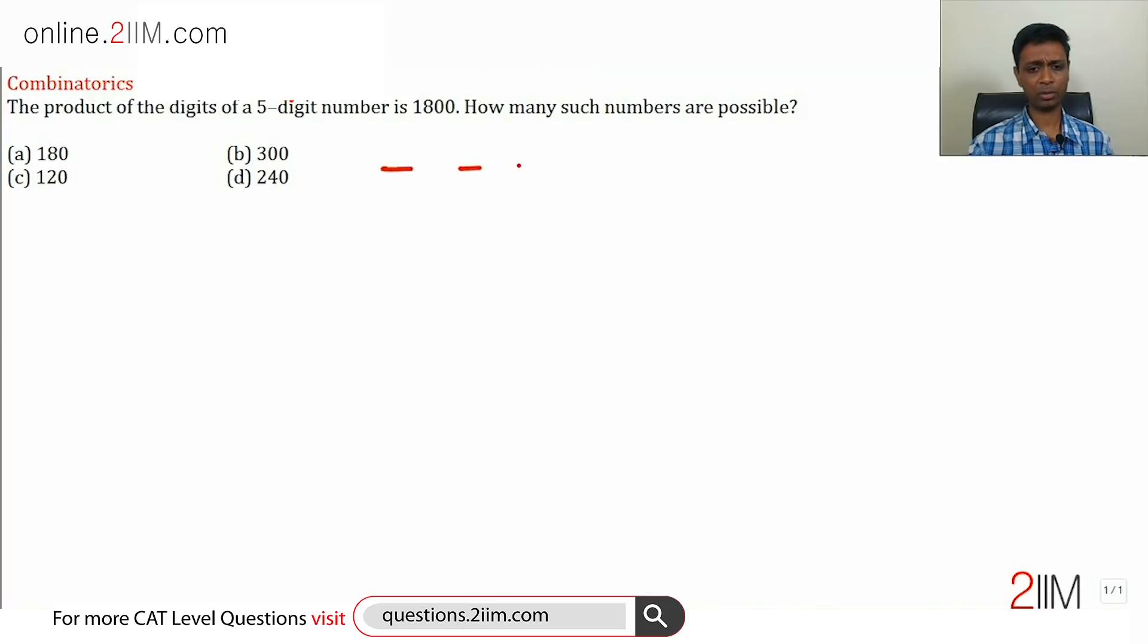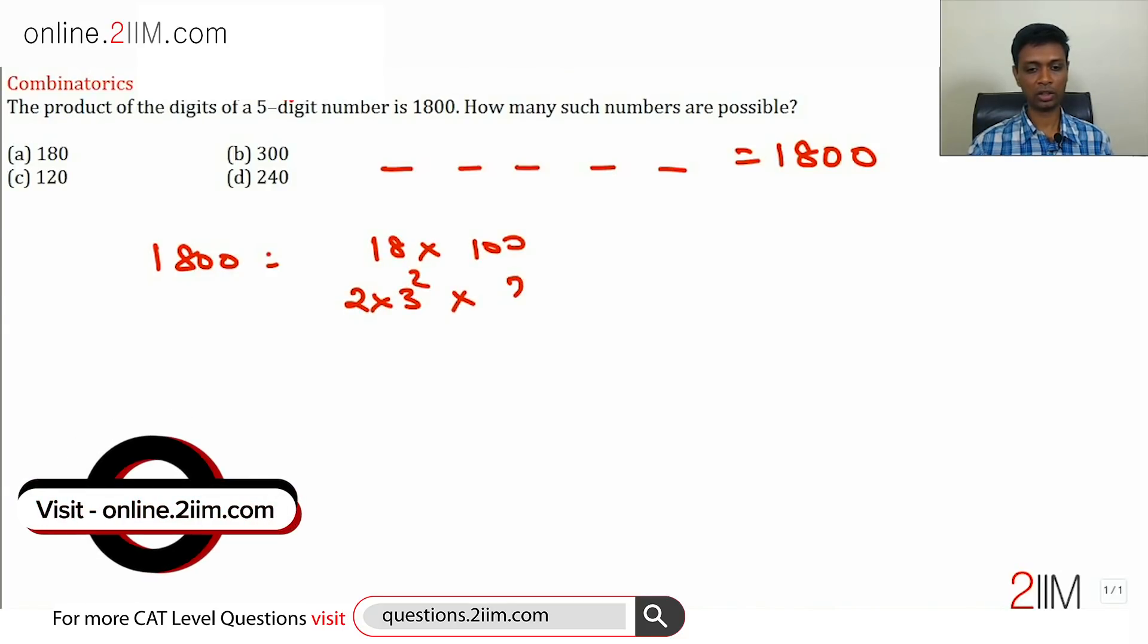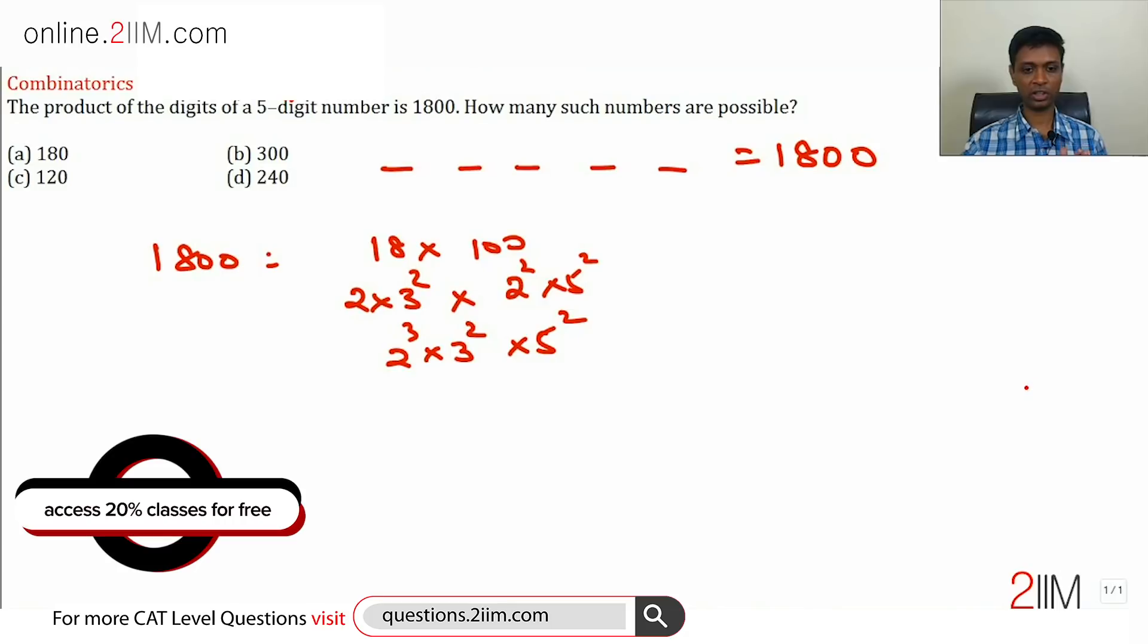We have a 5-digit number where multiplying all the digits gives 1800. To start, some combination multiplies to give 1800, so let's prime factorize 1800. This is 18 times 100, which equals 2 times 3 squared times 2 squared times 5 squared, giving us 2 cubed times 3 squared times 5 squared, so 72 times 25.